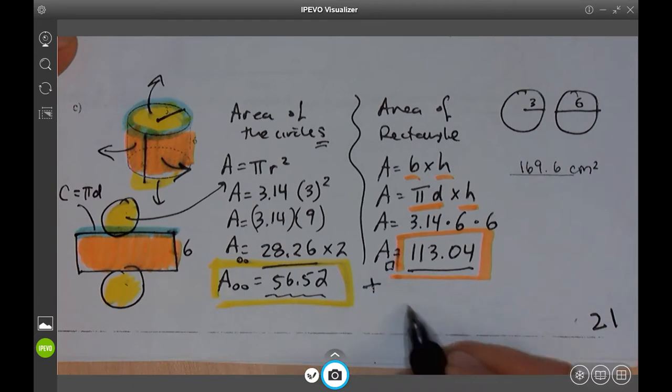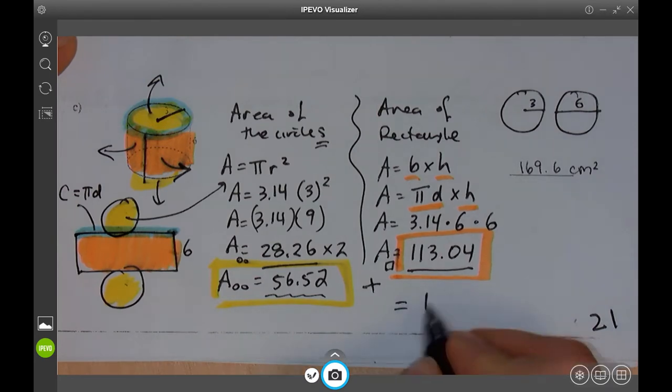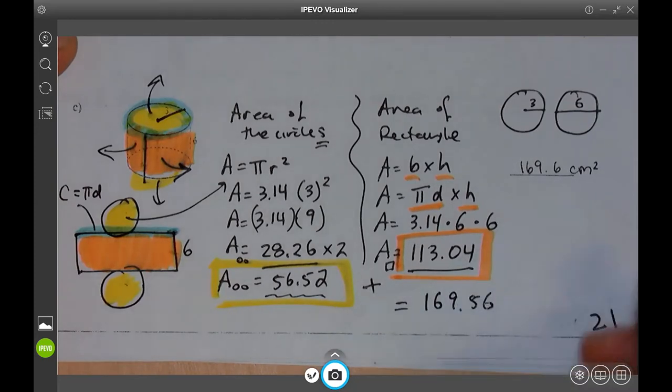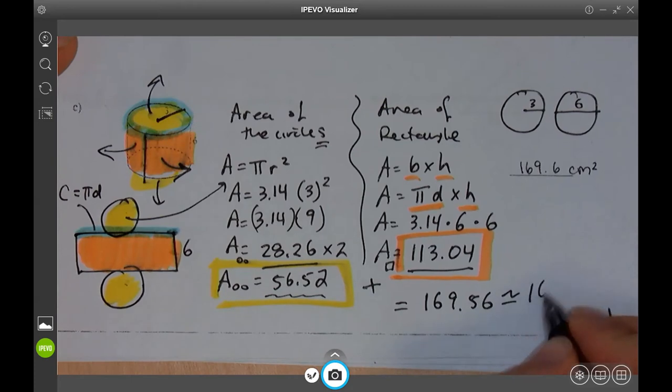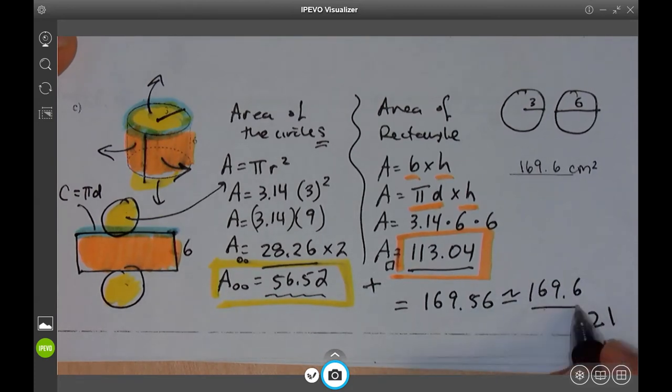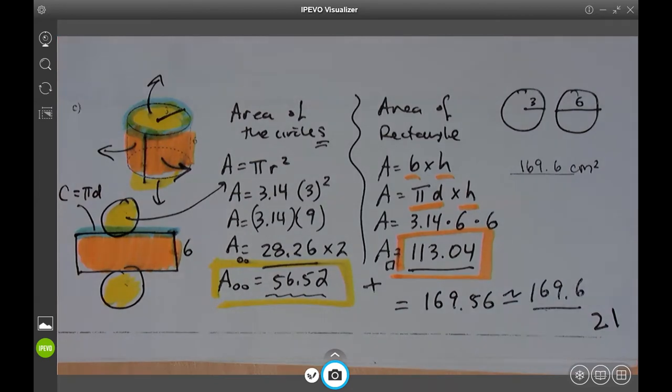Add these things together. We should get our total. So 113.04 plus 56.52. And we get 169.56, which to the nearest tenth, this is a rounding sign, 169.6, which is the same answer we get above.